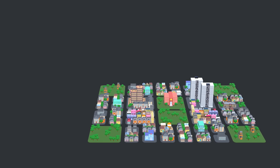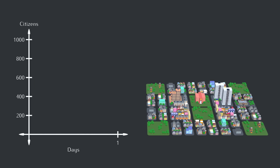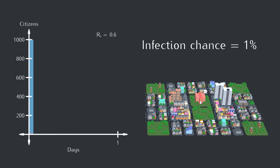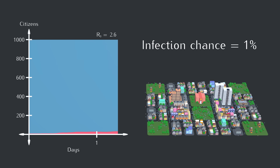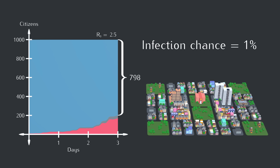Alright, let's run our first full simulation. We'll start with 10 infected blobs and an infection chance of 1% each time blobs interact in the same room. Let's pause here. This graph stacks numbers from the three different states on top of each other. For example, at the end of the third day, out of the 1,000 blobs, 798 of them are susceptible, 172 are infectious, and the other 30 have already recovered.